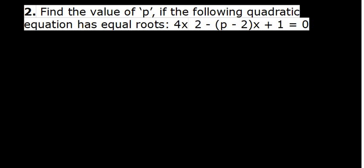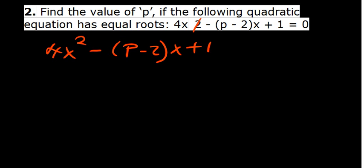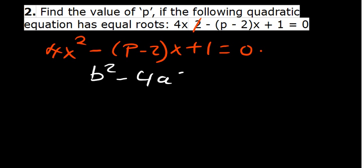The next question asks: find the value of p if the equation 4x squared minus (p minus 2)x plus 1 equals 0 has equal roots. For equal roots, the discriminant must equal 0.